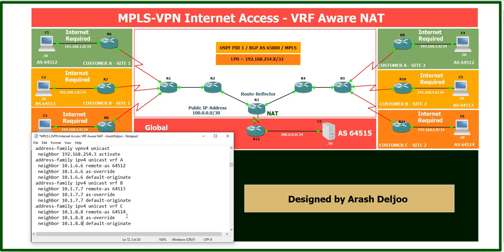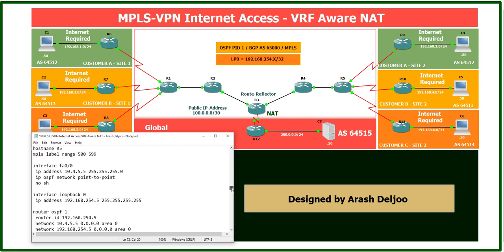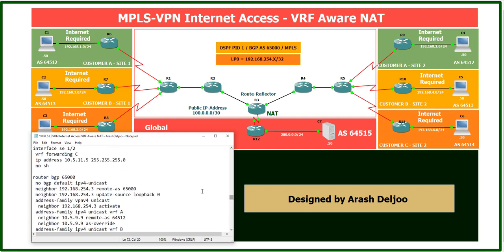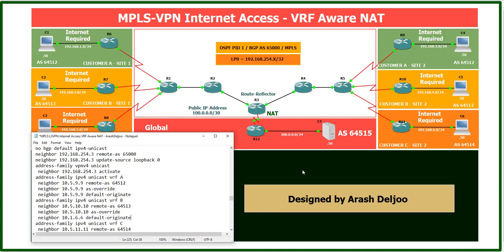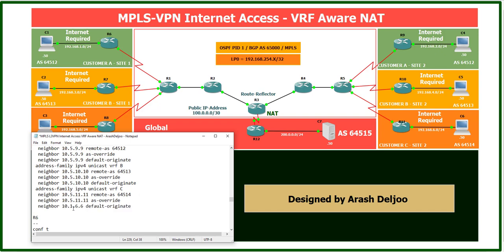In this scenario all sites need to receive internet service. For R5, under VRF A we configure: neighbor 10.5.9.9 default-originate — this advertises the default route to Router 9. Also neighbor 10.5.10.10 default-originate for Router 10, and neighbor 10.5.11.11 default-originate for Router 11. That completes the configuration we need for both R1 and R5.